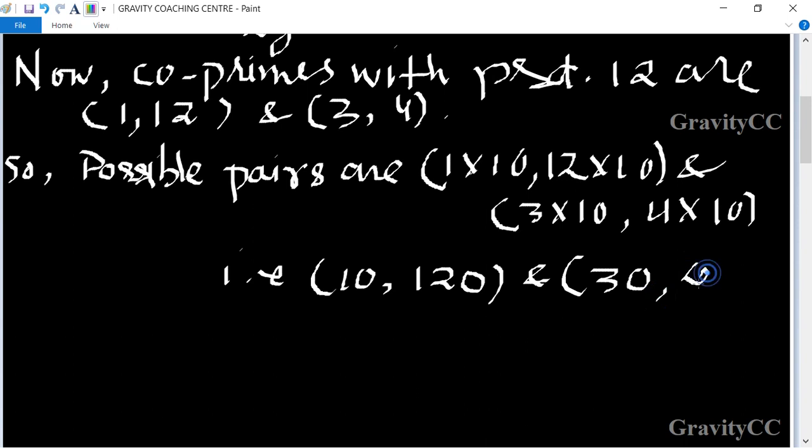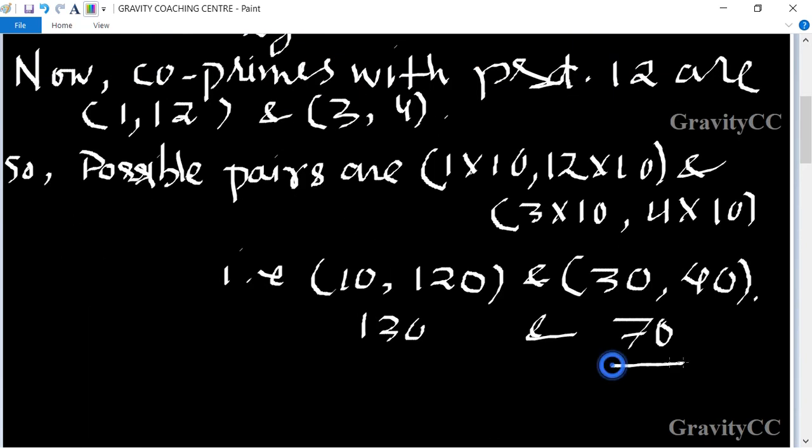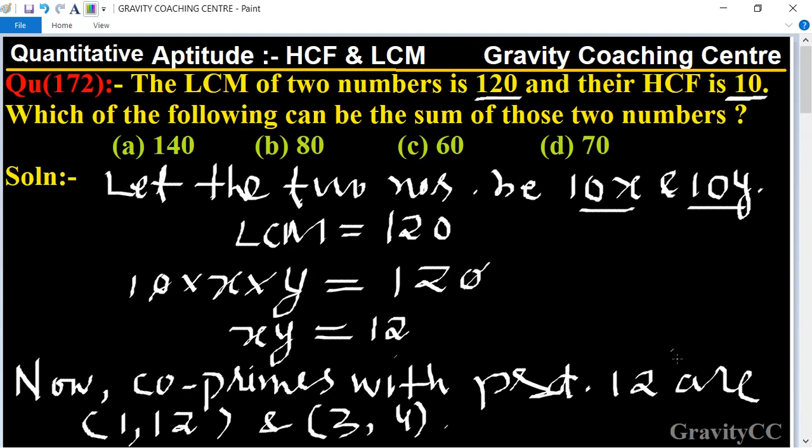So here two pairs are possible, and the sum of the numbers equals 130 and another one is 30 plus 40 equals 70. Which option is here? 70. So answer D is the right answer.